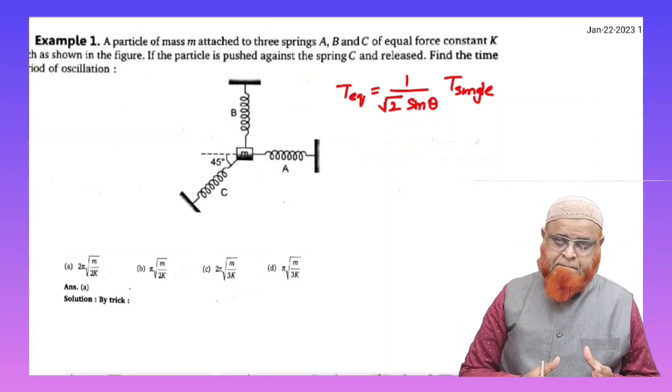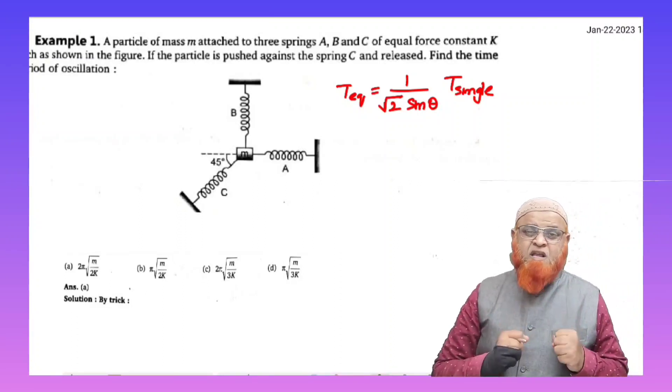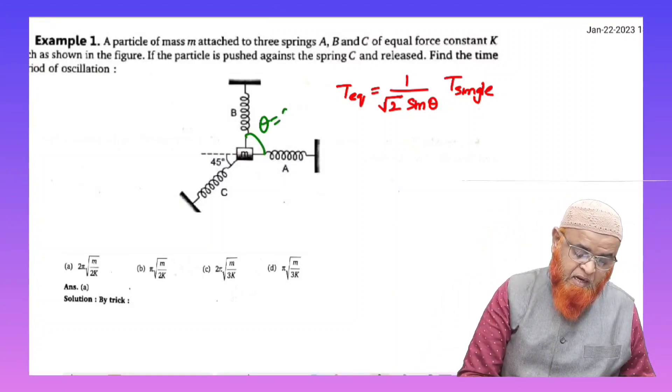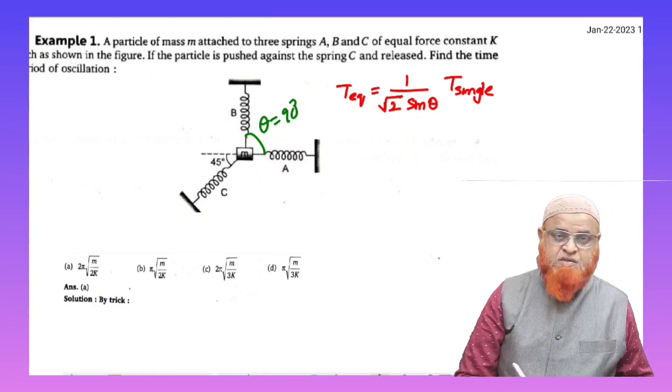If you observe this spring, there is a multiple spring concept here in which there are two springs having a certain angle, and that angle is theta, which is 90 degrees.